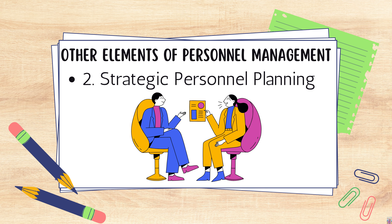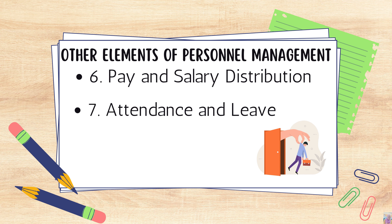Number four is benefit coordination. Determining the type of benefits employees receive and planning for their distribution is an essential part of personnel management. Number five is continuing education, which may include offering seminars, learning lunches, or attending professional conferences. Number six is pay and salary distribution, to ensure employee payroll functions correctly. Number seven is attendance and leave — managing personnel also means overseeing time off for sick and personal days.